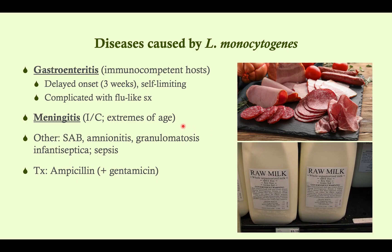The diseases Listeria causes: gastroenteritis occurs in immunocompetent and immunocompromised alike. It differs from run-of-the-mill Staph aureus or C. perfringens gastroenteritis in that it has a very delayed onset — median incubation period of about three weeks. So you might eat deli meat and then three weeks later develop diarrhea, nausea, and vomiting. It also causes flu-like symptoms including headache, fever, night sweats, and myalgias, which is fairly unique to Listeria gastroenteritis.